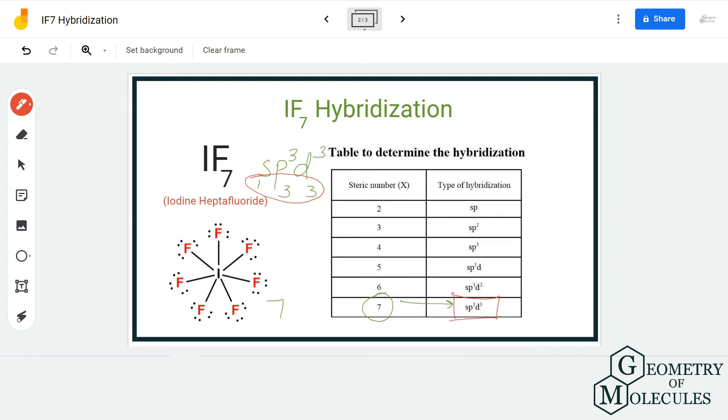You can find out hybridization using other methods and formulas, like looking at the electronic configuration of the central atom, but that might be time-consuming. This method of finding the steric number might come in handy during your exams and tests. I hope this video helps you understand the hybridization of IF7 molecule.